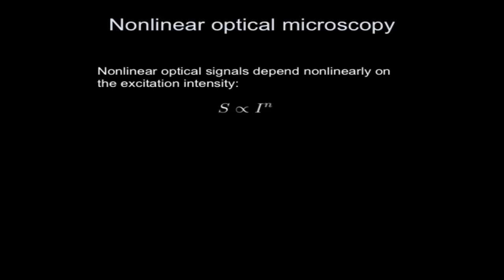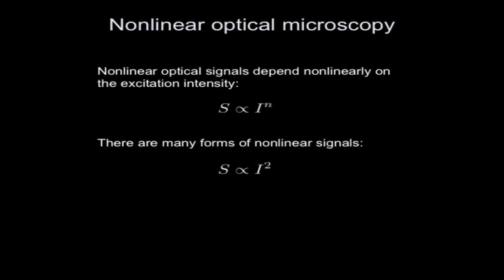Now the basics of nonlinear optical microscopy: nonlinear optical signals depend nonlinearly on the excitation intensity - that is the key. In nonlinear optical microscopy, we define the nonlinearity through the intensity to a certain power. If this power is larger than 1, you're dealing with a nonlinear optical process. For instance, a process that depends on the second order of the intensity, or I can send in two beams where the signal depends on the intensity of beam 1 and beam 2 - linear in each but nonlinear overall.